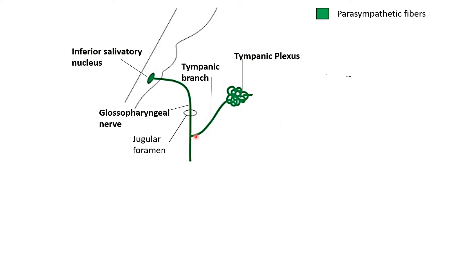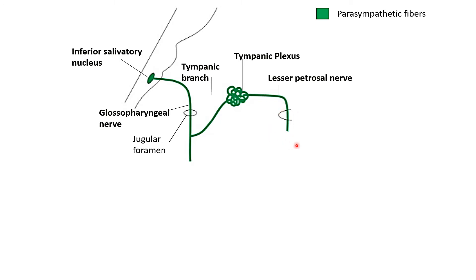From the tympanic plexus, a nerve called the lesser petrosal nerve arises. As the name suggests, it pierces the roof of the tympanic cavity formed by the petrous bone and enters the middle cranial fossa. From there, it leaves the cranial cavity via the foramen ovale and relays in the otic ganglion, which is located in the infratemporal fossa.